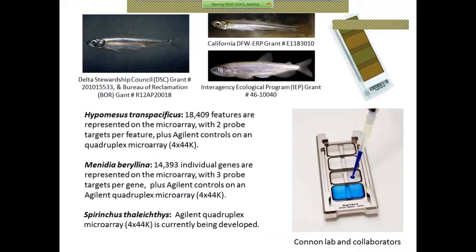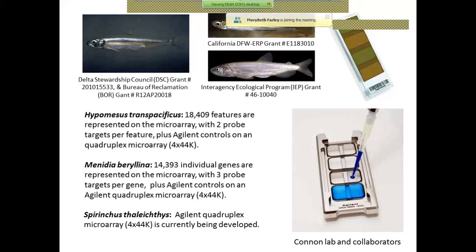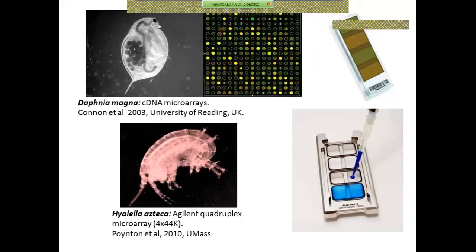In my lab at UC Davis, we have sequenced the transcriptome for Delta Smelt, the inland silverside, and we are starting to work on the longfin smelt, which are species of interest in California. We're working with a company called Agilent that prints the microarrays for us. For Delta Smelt there are about 18,000 genes; for the inland silverside we have over 14,000 individual genes. In my past life back in the UK in 2003, I sequenced the transcriptome for Daphnia magna and have done a lot of microarray work on that.